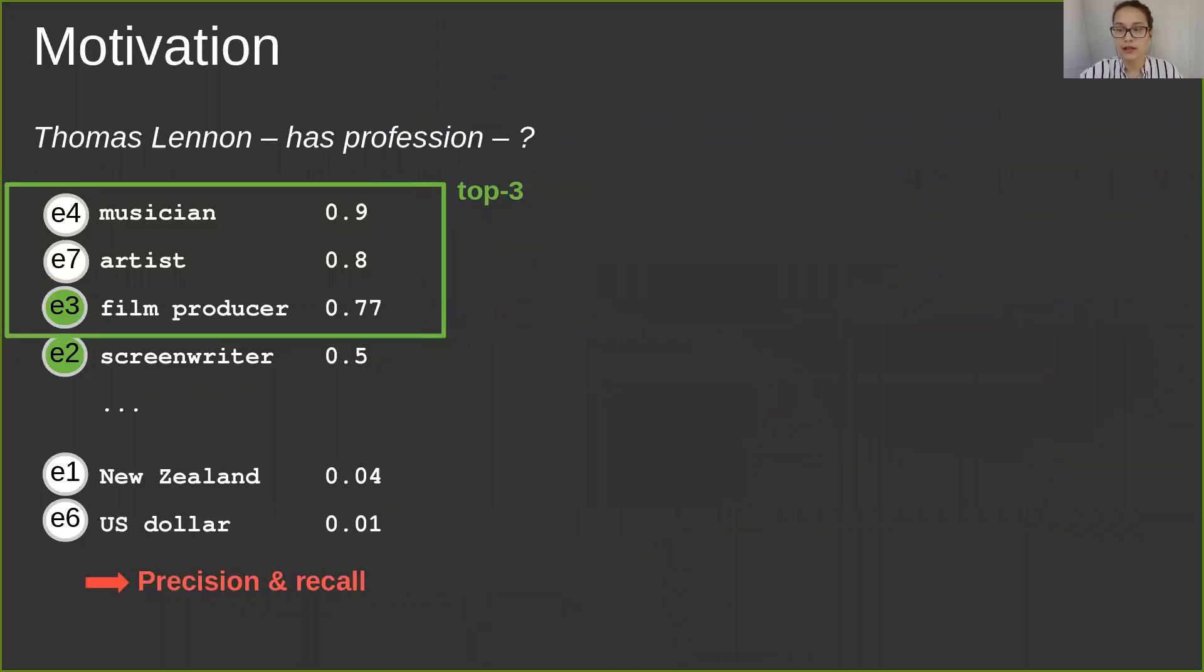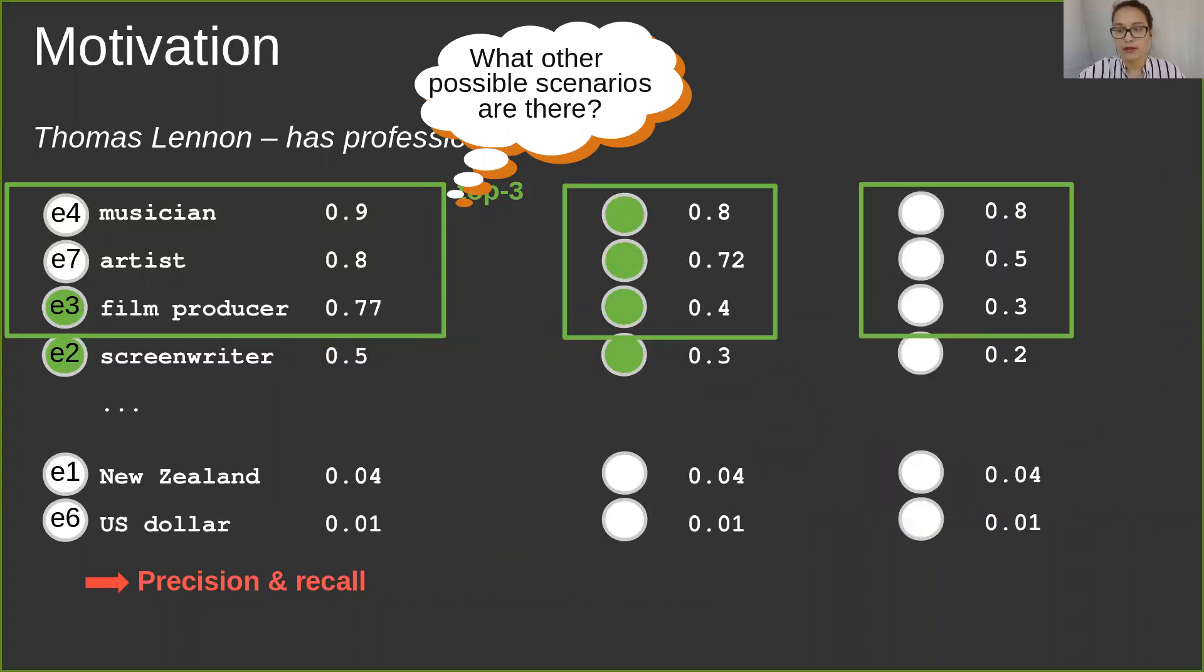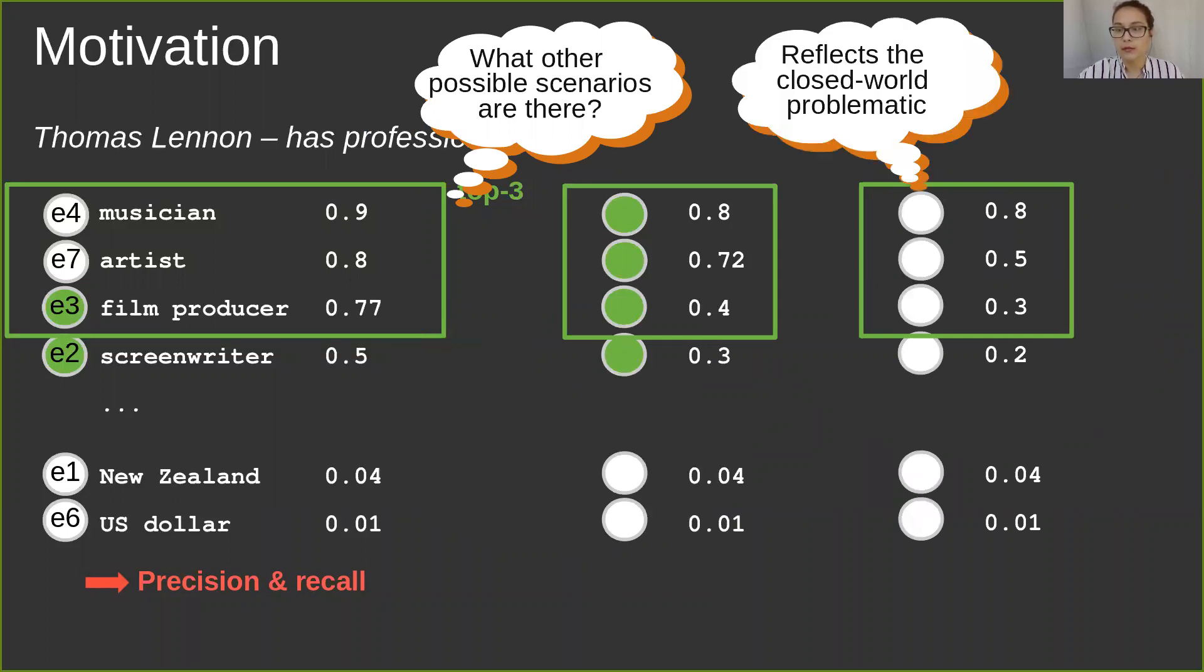Let us further extend the real-world KBC scenario. What else is possible? There might be a person with more than three professions, which will be inevitably cut to three. We also consider it to be a realistic case where no answer can be given to a query because the profession is for some reason not in the knowledge base yet.